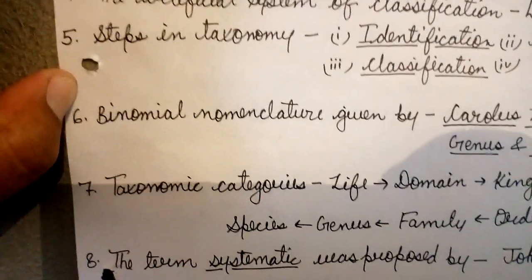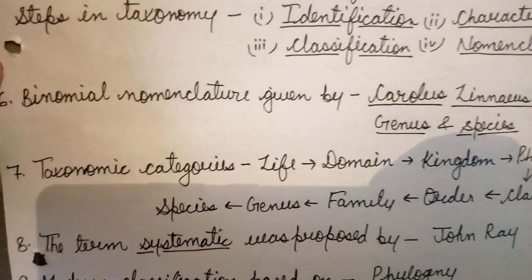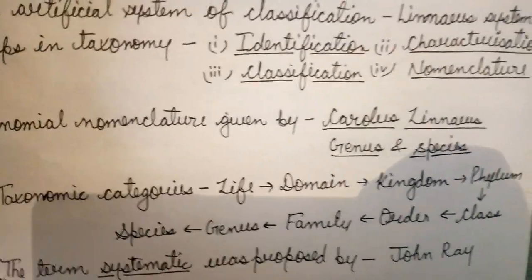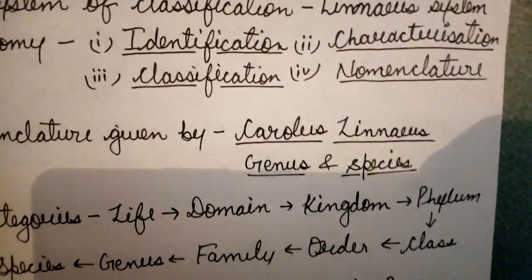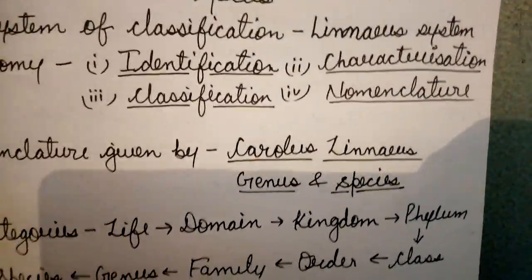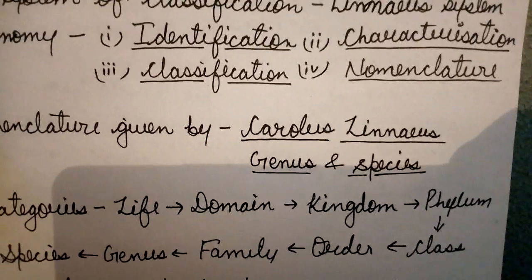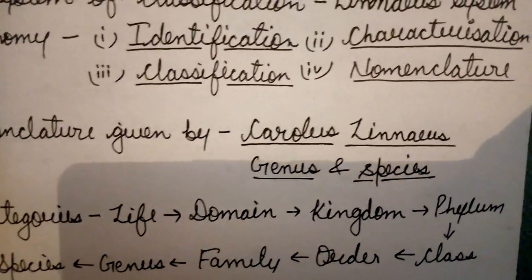Next, we will talk about binomial nomenclature, which was given by Carolus Linnaeus, in which any organism has two names: the first is genus and the second is species.